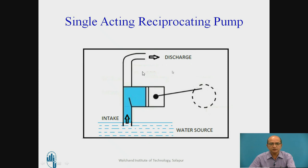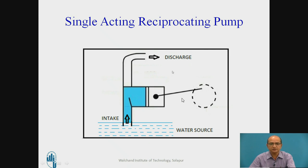Through the delivery pipe, the water is collected in a tank stored at the high level. The piston is connected to the piston rod, which is connected to the connecting rod and crank mechanism. The crank is rotated with the help of an electrical motor, which provides mechanical energy to the reciprocating pump. This mechanical energy is converted into hydraulic energy, pressurizing the water and sending it to the delivery tank.